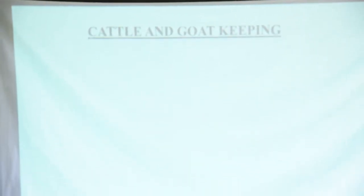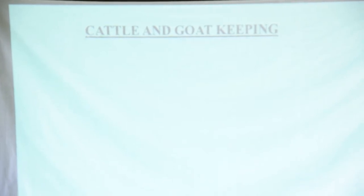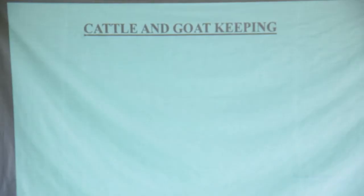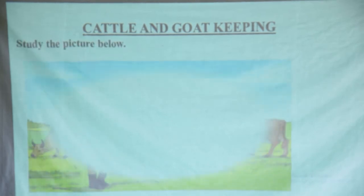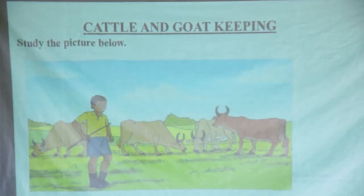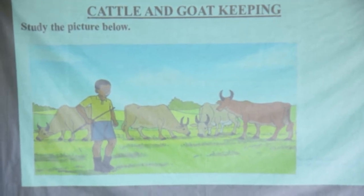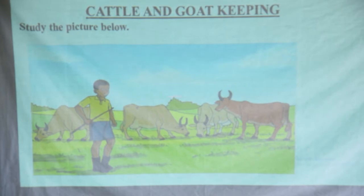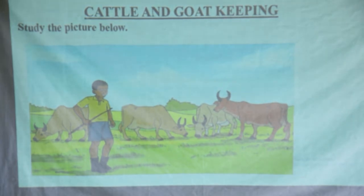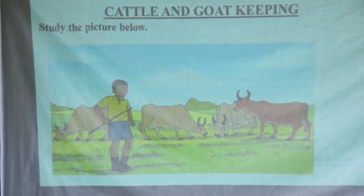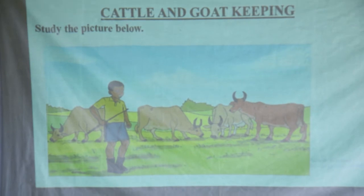This time, we have come back with the next topic, which is specifically cattle and goat keeping. Looking at the pictures here, you can see a view of animal keeping or rearing animals. You can see it's a boy — we can call him a herdsman — looking after cattle. This gives us a picture of what we're going to look at in this lesson.